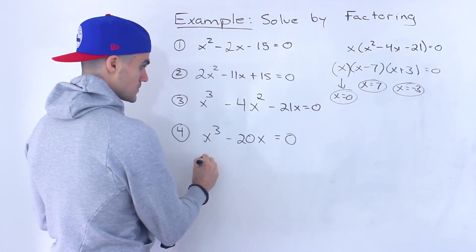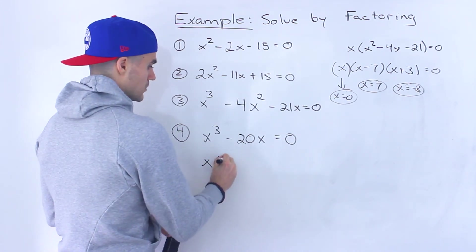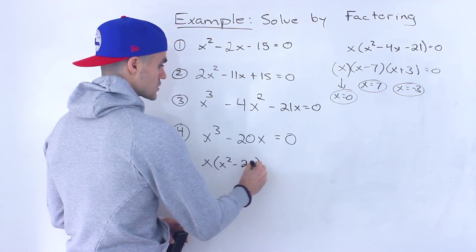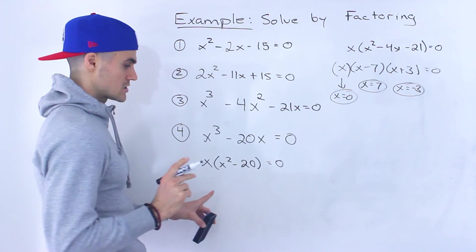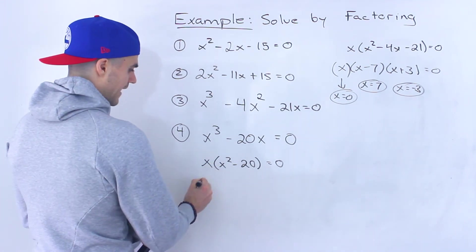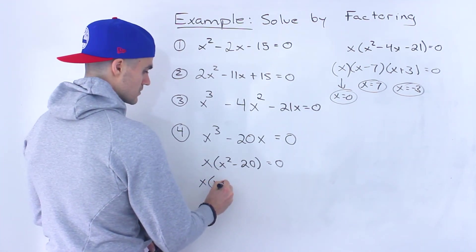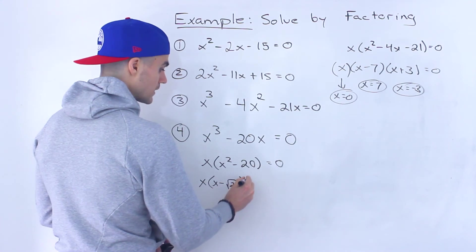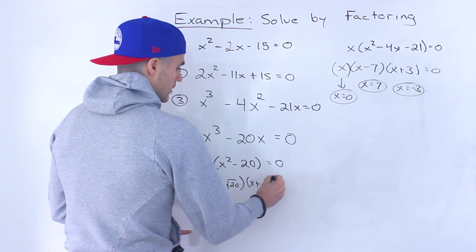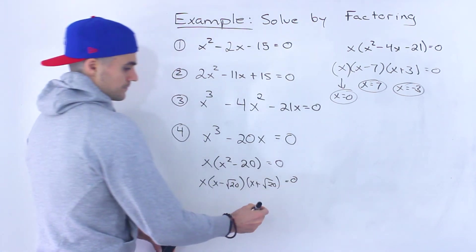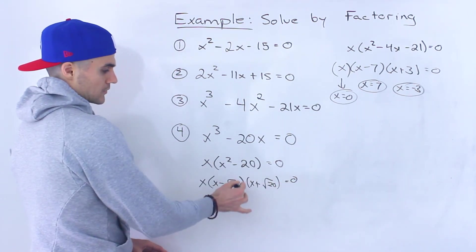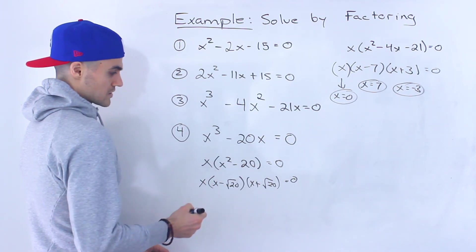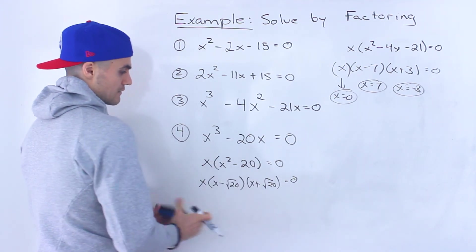And then this last one, same thing. Notice we could take out an x, and we'd be left with x² - 20. x² - 20 doesn't factor smoothly. You can pretend it's a difference of squares, so you could do (x - √20)(x + √20). But that's not really proper format for factoring where you're going to have square roots like that. So usually you'll see it just left like this.